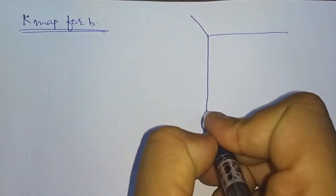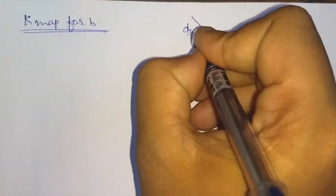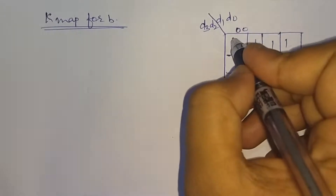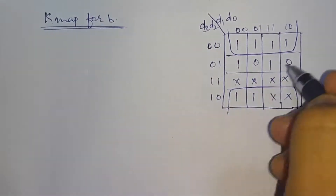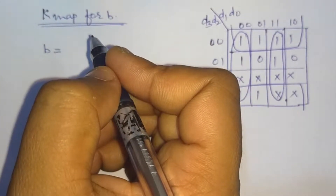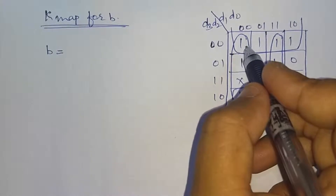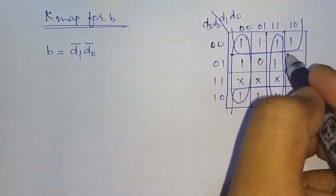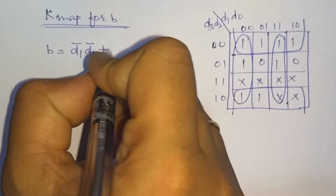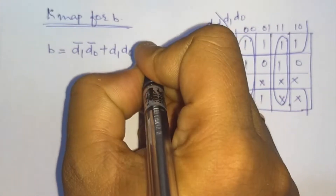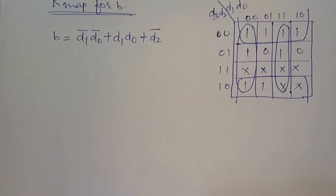For segment B, the function for B is derived from the K-map. From one grouping we get D1'·D0', from another grouping we get D1·D0.